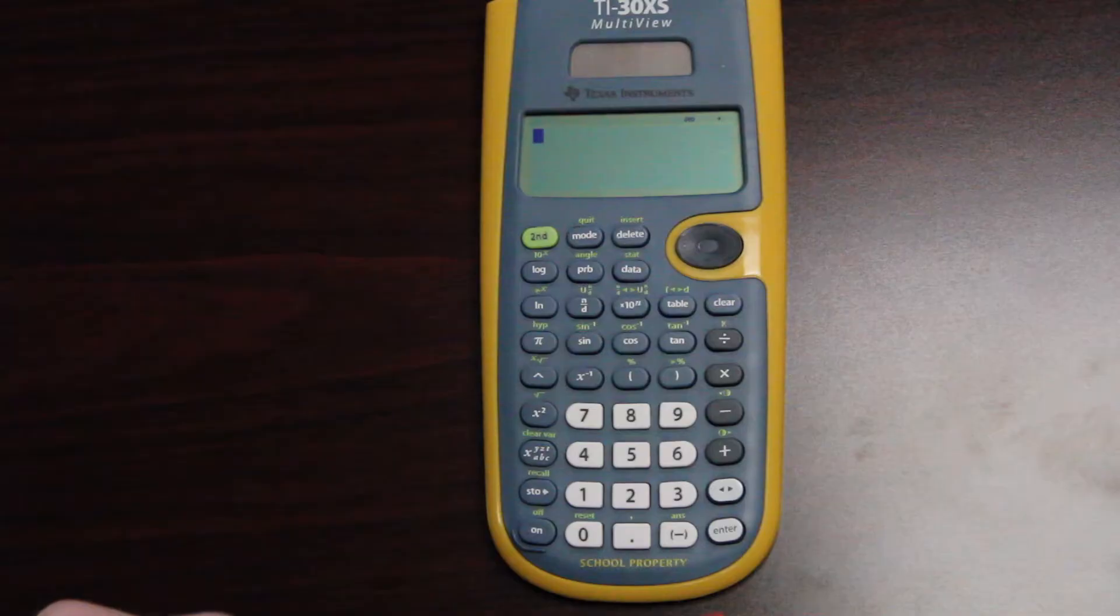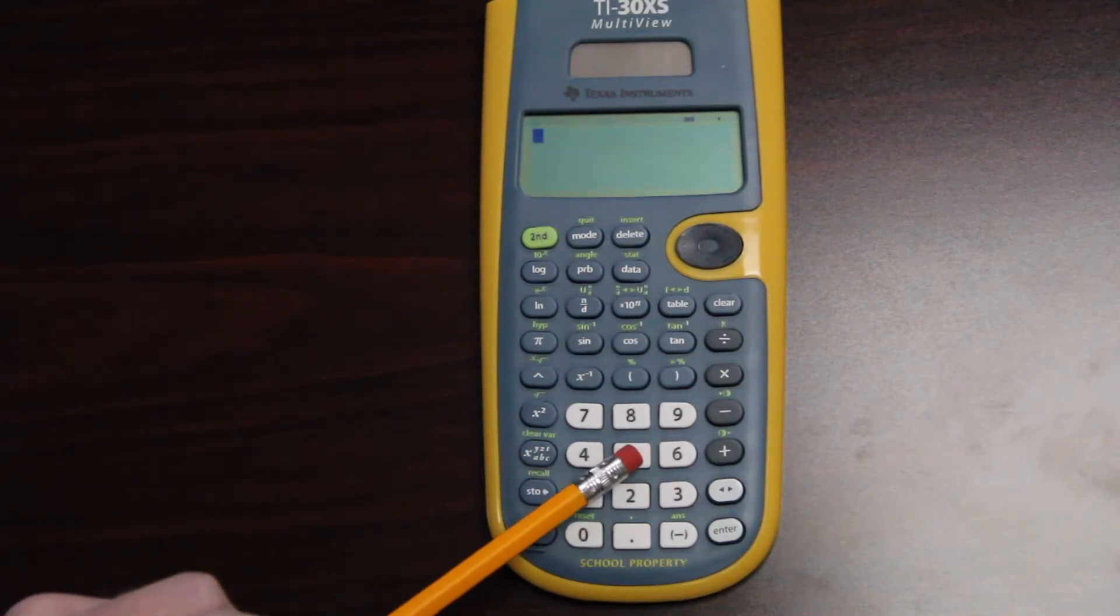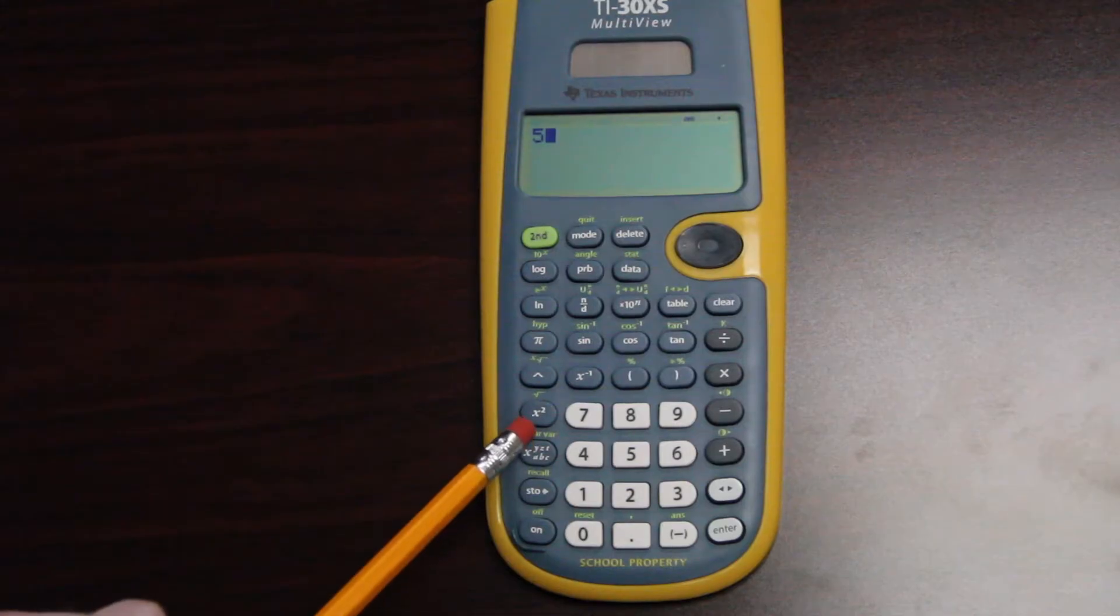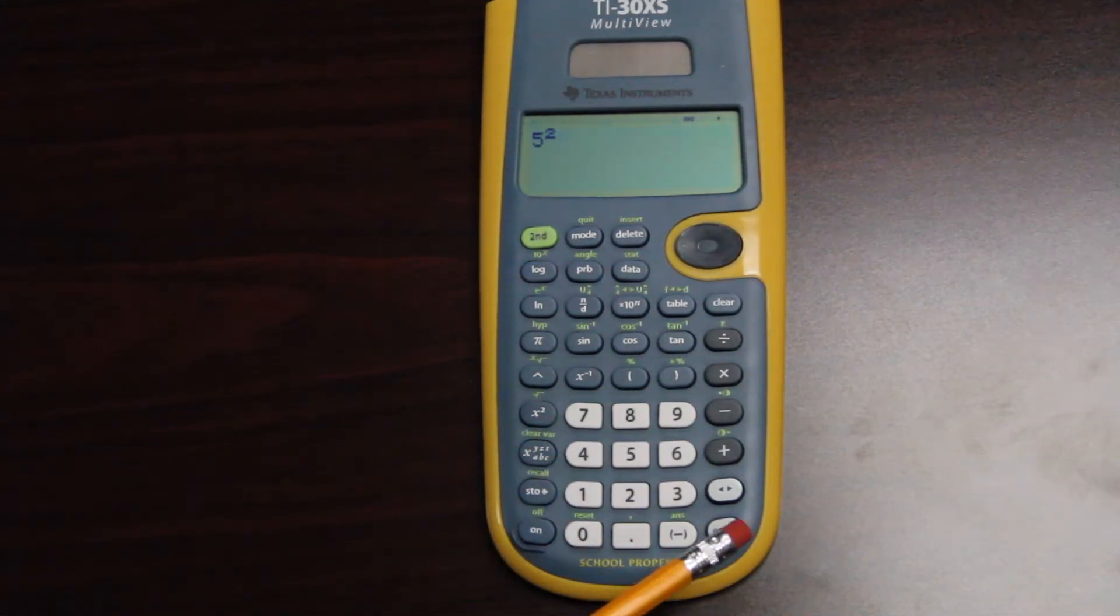Another feature you have is you can square a number, and the way you do that is let's say you want to take the number five and I want to square it. There's a button here that says x to the second power. I hit that, and I hit enter, and my number is squared.